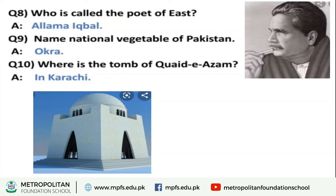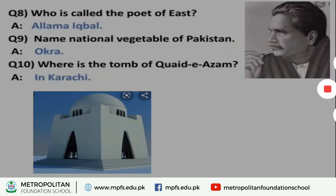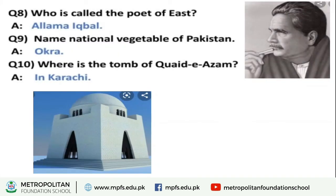Question number 9: Name the national vegetable of Pakistan. And the answer is Okra — O-K-R-A. Okra is represented as the national vegetable of Pakistan, which means 'bhindi.'